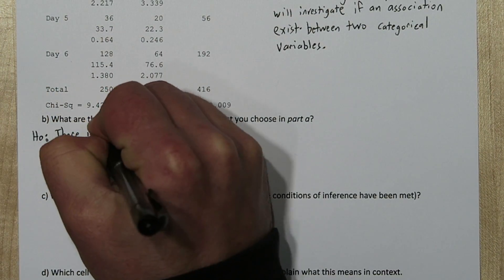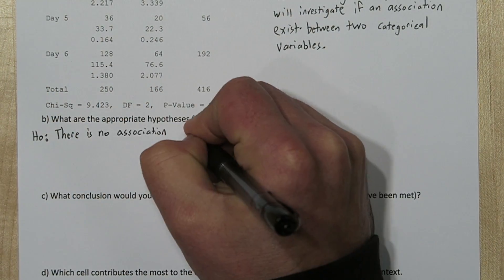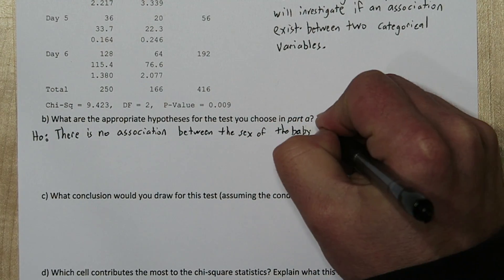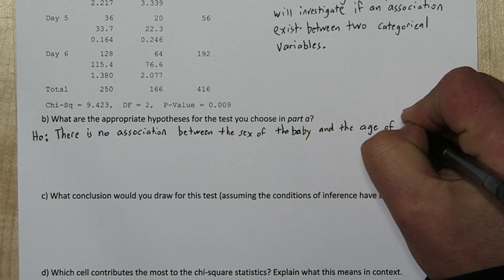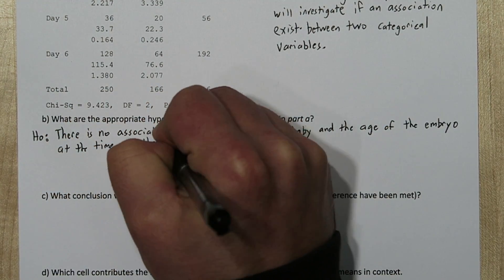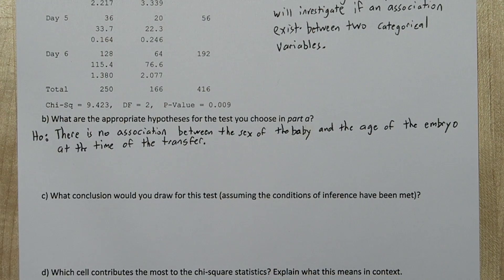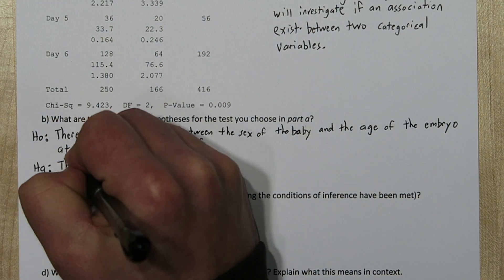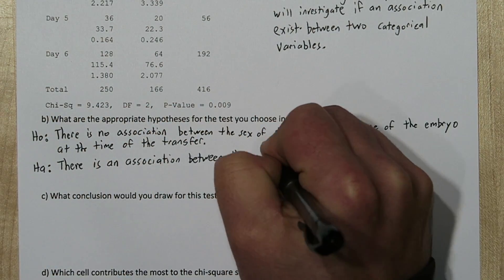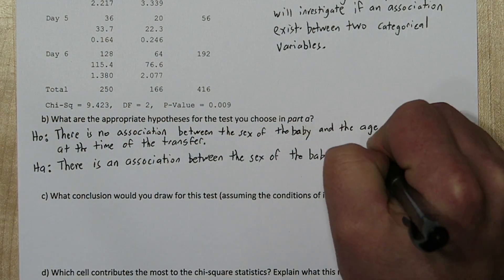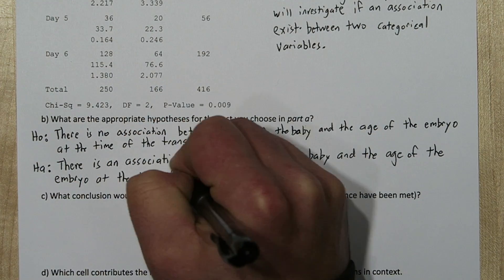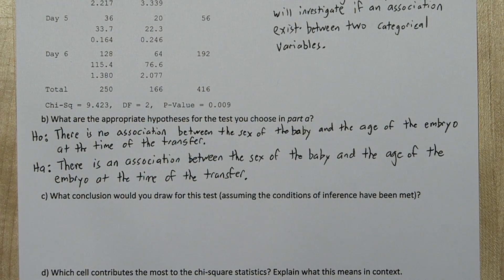Our null hypothesis is there is no association between the sex of the baby and the age of the embryo at the time of transfer. Our alternative hypothesis is there is an association between the sex of the baby and the age of the embryo at the time of transfer.